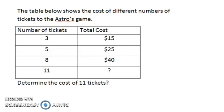Let's apply this to a math word problem. The table below shows the cost of different numbers of tickets to the Astros game. Number of tickets displayed on the left, total cost displayed on the right. Determine the cost of 11 tickets.